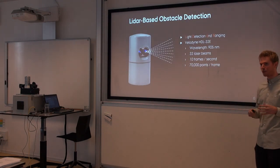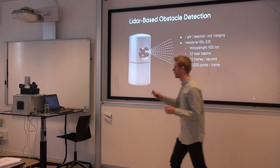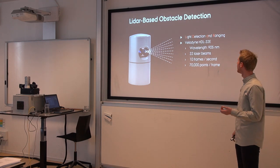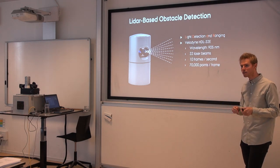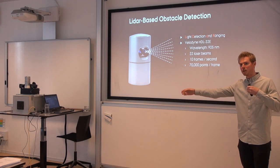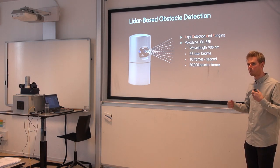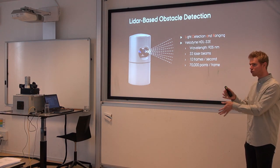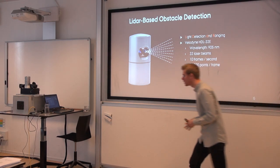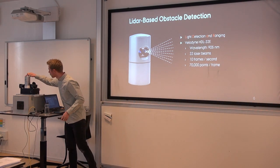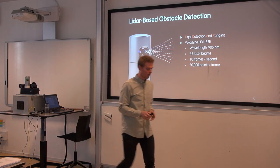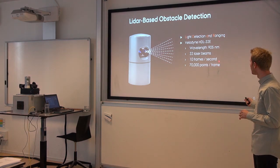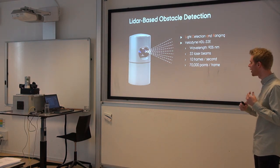To narrow it down even further, I have focused on the LiDAR sensor. LiDAR is an acronym for Light Detection and Ranging. It uses laser pulses that it emits and then measures the distance to objects by measuring the reflectance. It does this with 32 laser beams rotating around 10 times a second, generating point clouds. Each point cloud consists of around 70,000 points, and we get 10 of these per second.